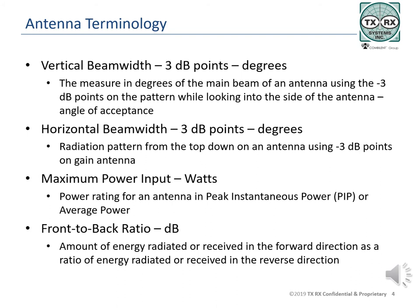Gain antennas will have a smaller angle of acceptance in both horizontal and the vertical patterns. Maximum input power for an antenna is the highest power it can handle under continuous duty, and may be called the maximum average power. The second power specification is peak instantaneous power, or PIP, and is the power handling limit when digital signals are applied. PIP ratings are based on the modulation type and the number of carriers.